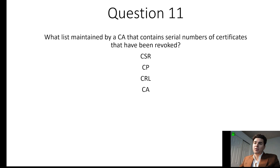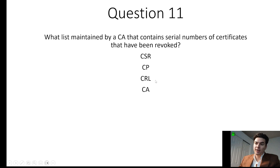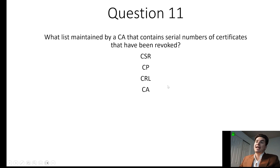What list maintained by a certificate authority contains serial numbers of certificates that have been revoked? The certificate revocation list is what CRL stands for, and that is what contains the serial numbers on the certificates that have been revoked.